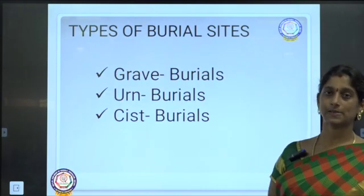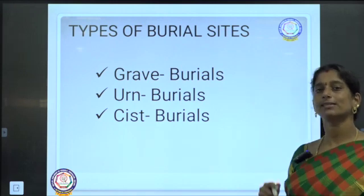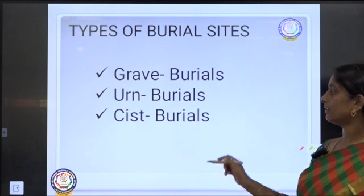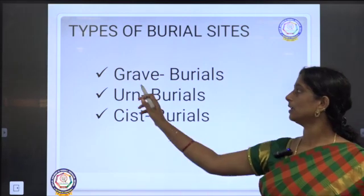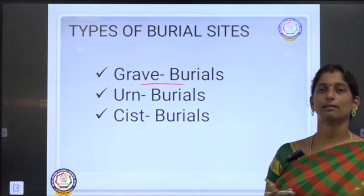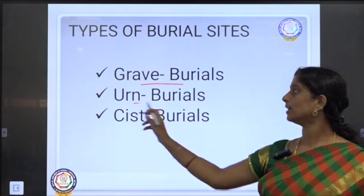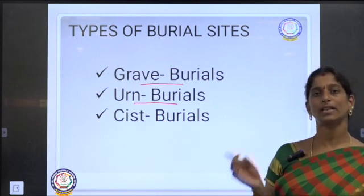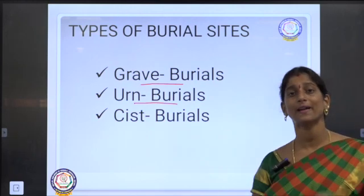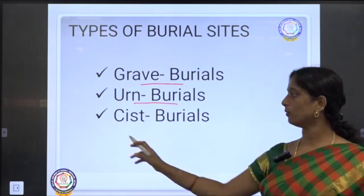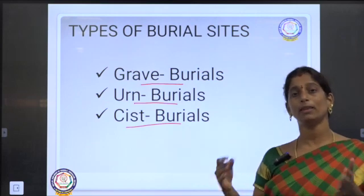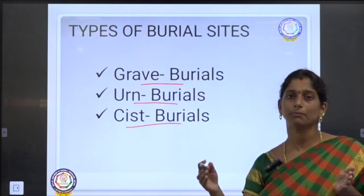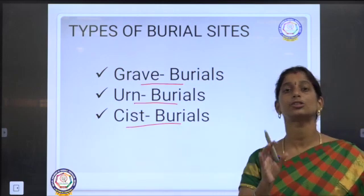Next come the types of burial sites. There were various types. First is grave burials — simply the place where dead bodies were buried. Next is urn burials — a big vessel in which the dead body was placed, and the vessel was buried inside the soil. The third is cyst burials — the dead body is buried with bigger stones built around it like a small tomb, made of huge stones and rocks.